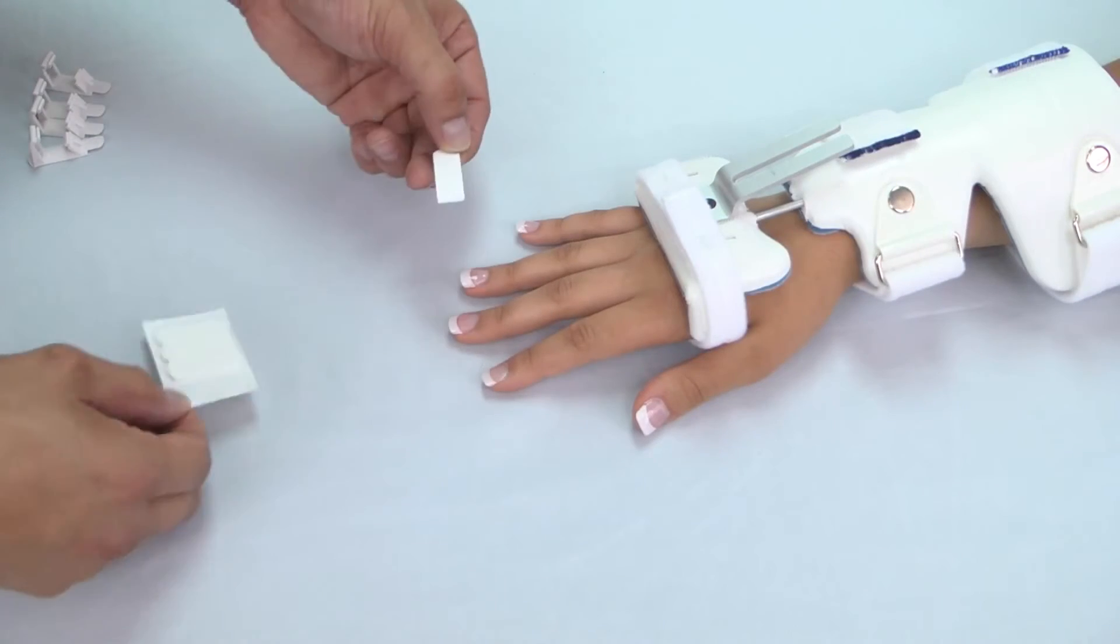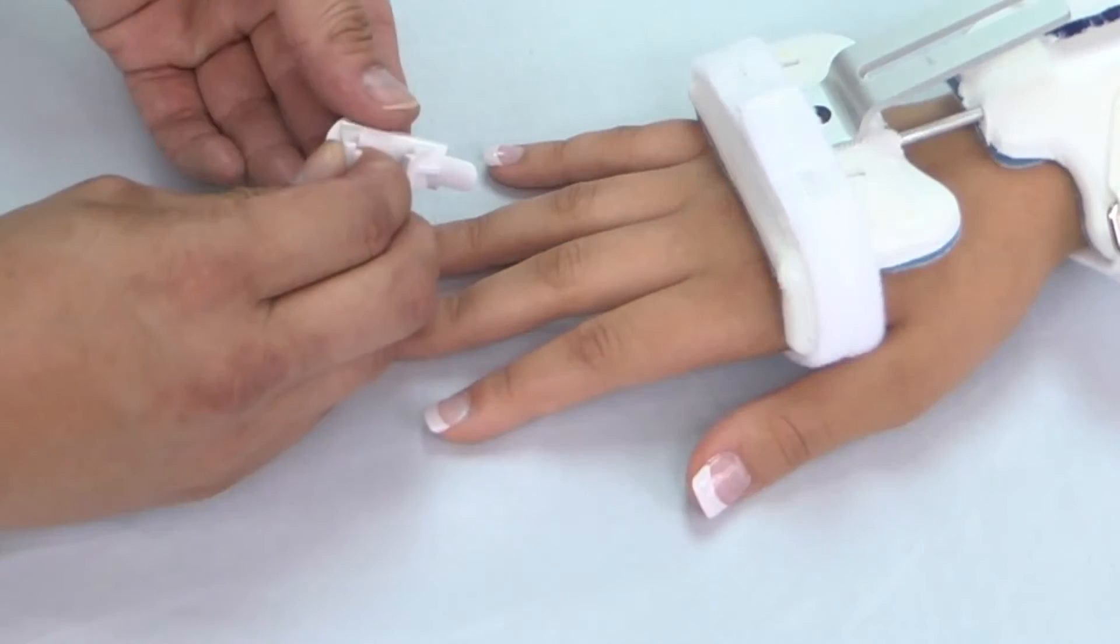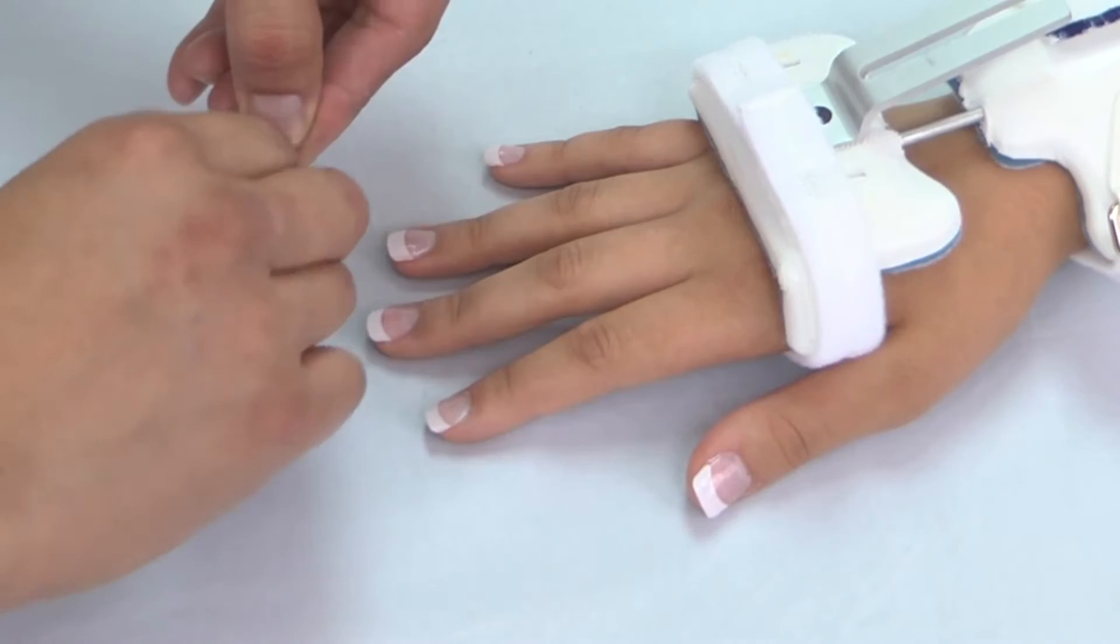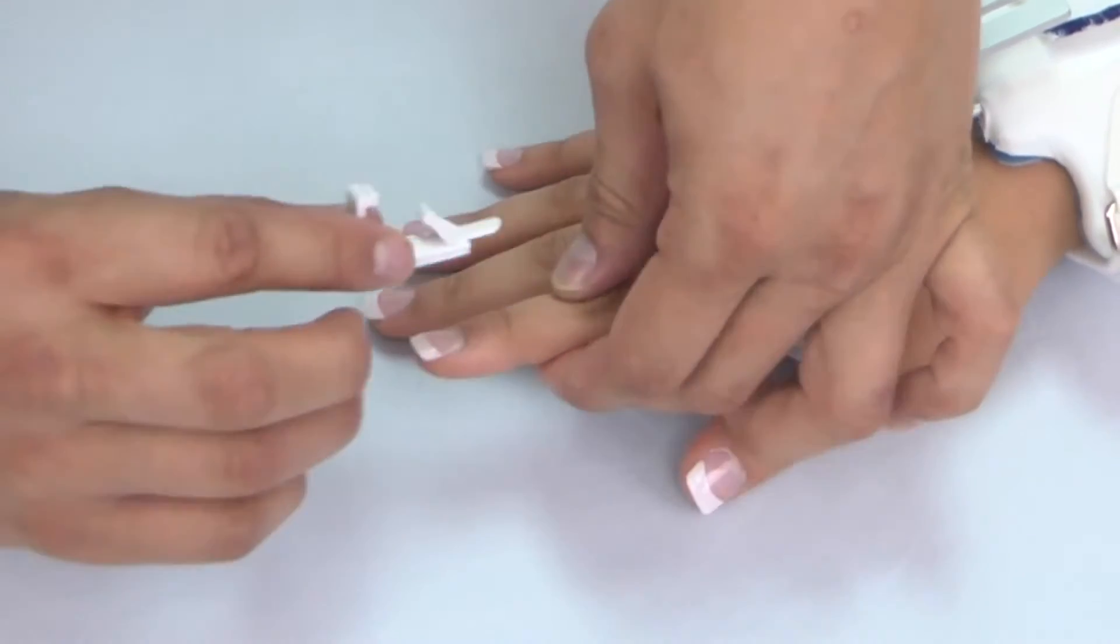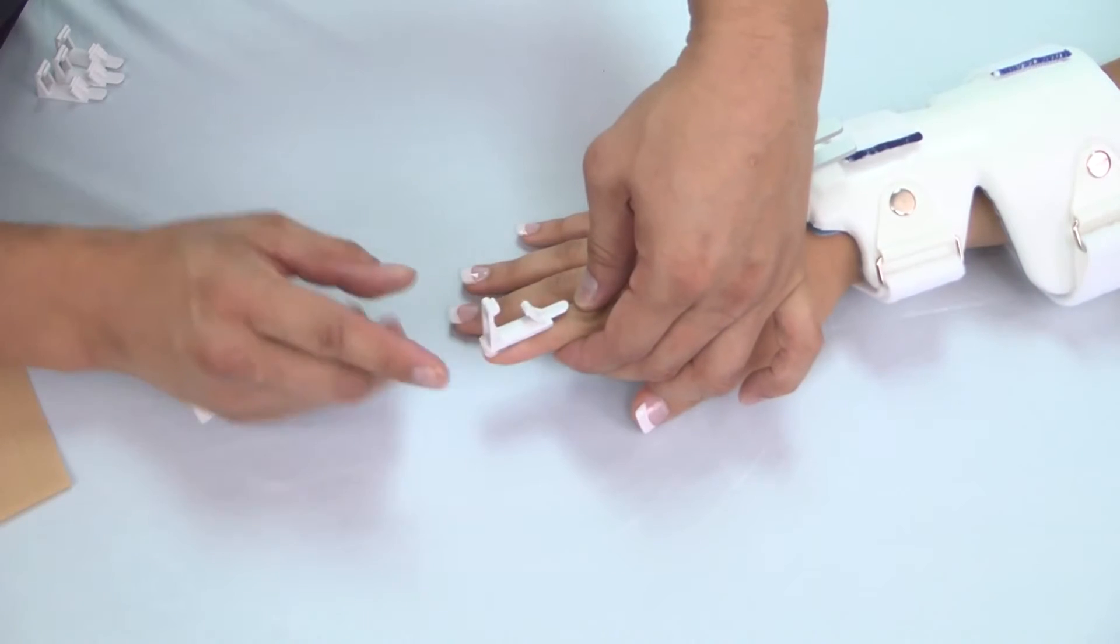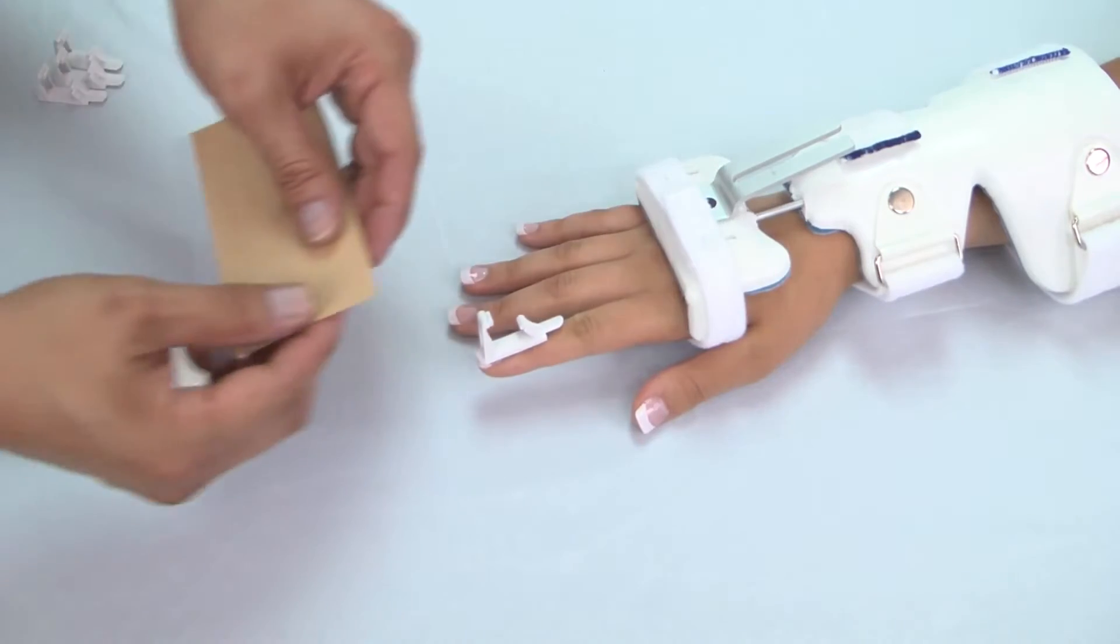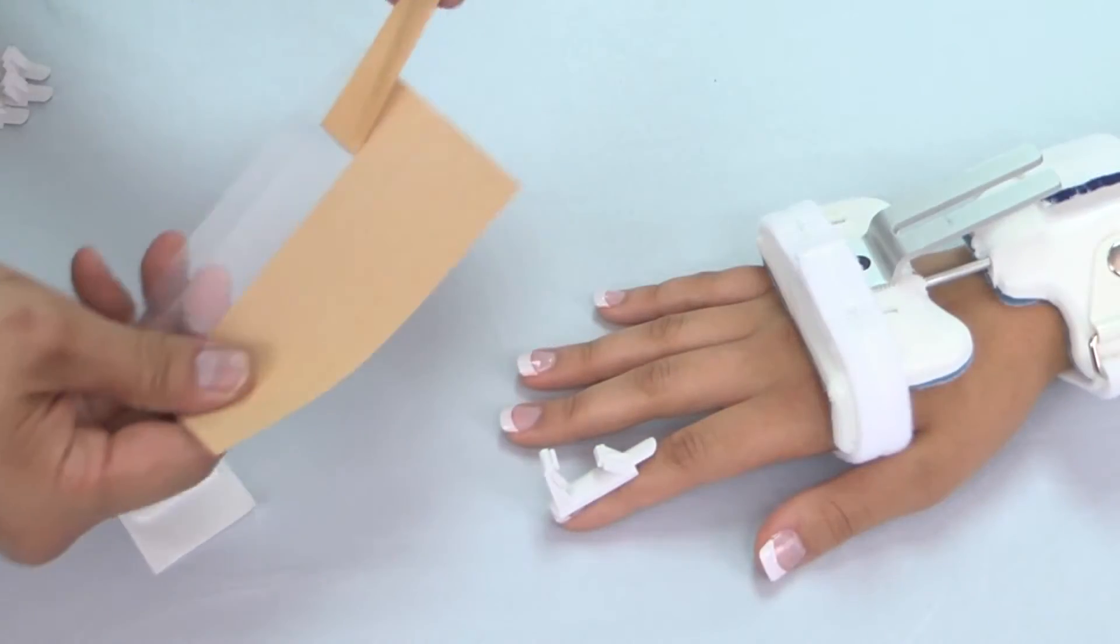Next, attach the finger clips. First, apply the fully adhesive side of the VHB pad to the underside of the finger clip. Then peel the backing off the exposed side of the pad and adhere the clip to the fingernail, positioning the finger clip to align with the end of the finger. To complete the attachment, peel and wrap a finger strip around the finger and the finger clip.